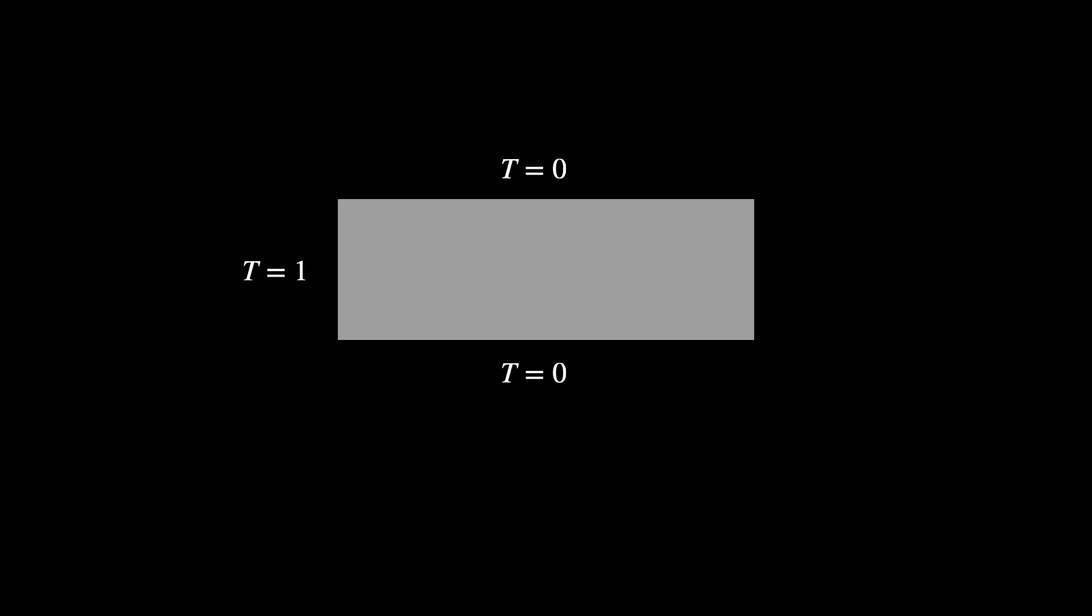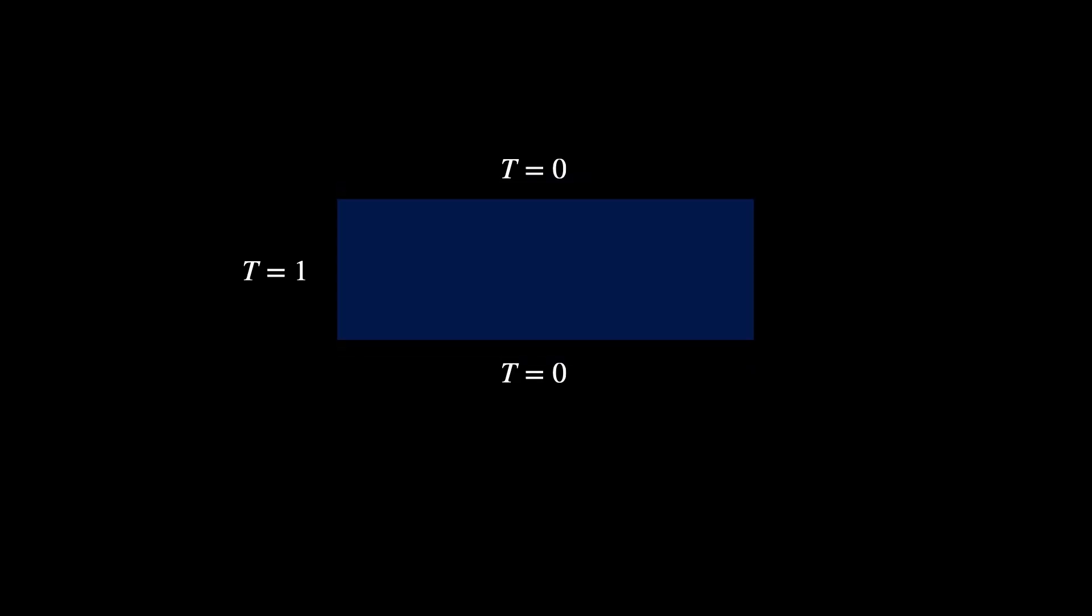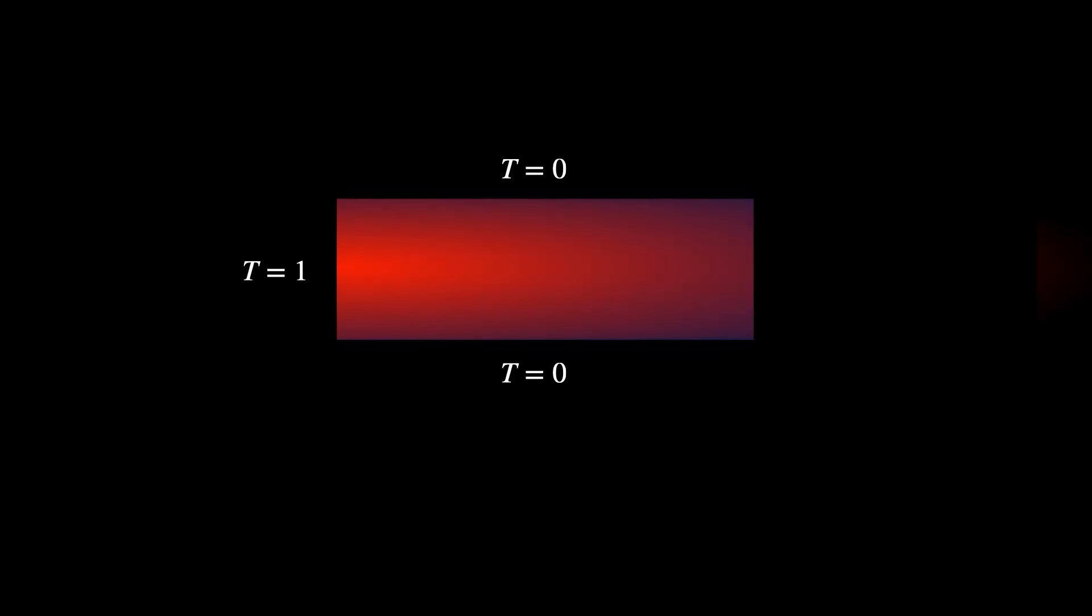If we imagine fixing the temperature at 1 at x equals 0 like it's being heated at this end and on the other edges y equals plus or minus π over 2 the temperature is fixed at 0. These are the boundary conditions. Now the sheet would heat up for a period of time and then settle at a steady state. That is the temperature would stop changing. What Fourier realized is that in the steady state the temperature stops changing with time. The derivative of the temperature with respect to time goes to 0 and the heat equation becomes Laplace's equation.